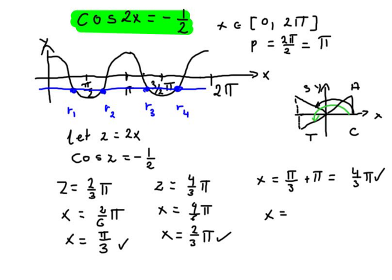And the last one. 2 over 3 pi plus pi radians. We'll give you 5 over 3 pi radians.